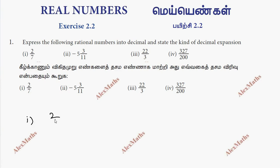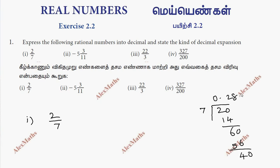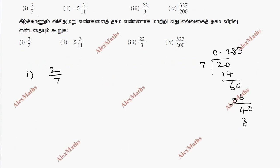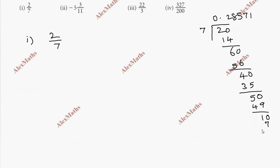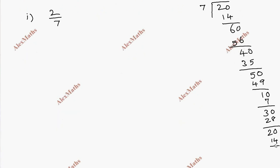The first division is 2 by 7. So 2 divided by 7: 0 point — 2 times 14, balance 6. So 8 times 56, balance 4. 5 times 35, balance 5. 7 times 49, balance 1. 4 times 28, again 2 times 14, balance 1.